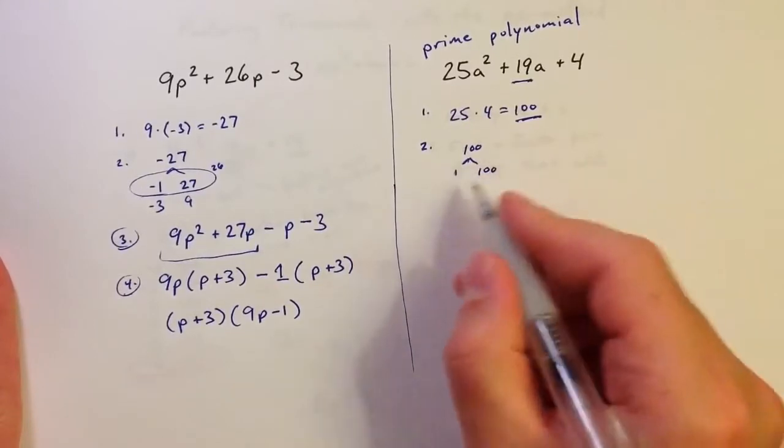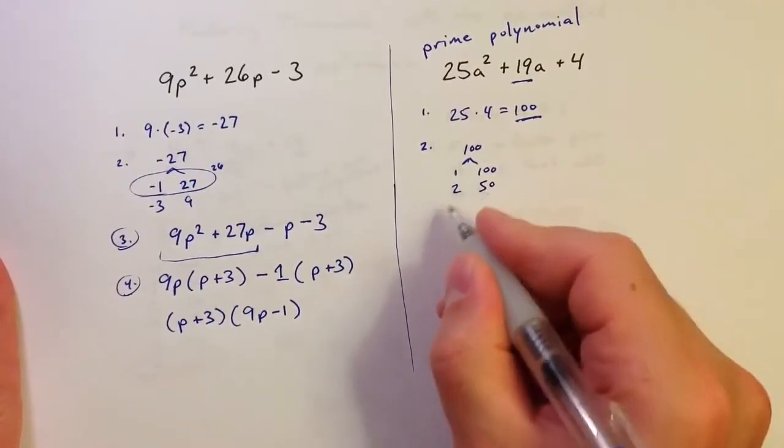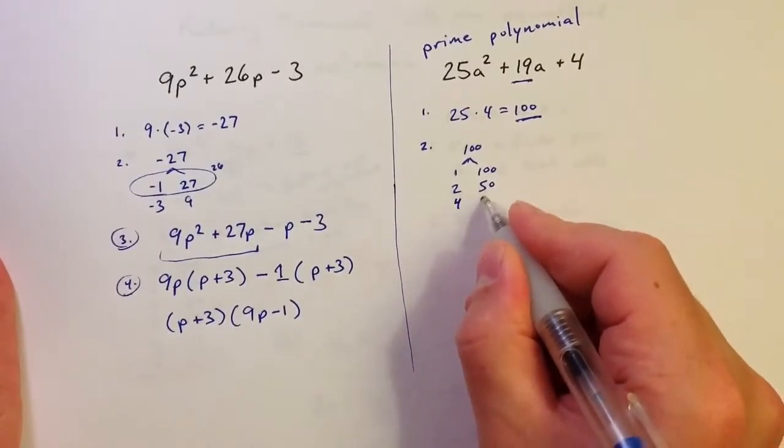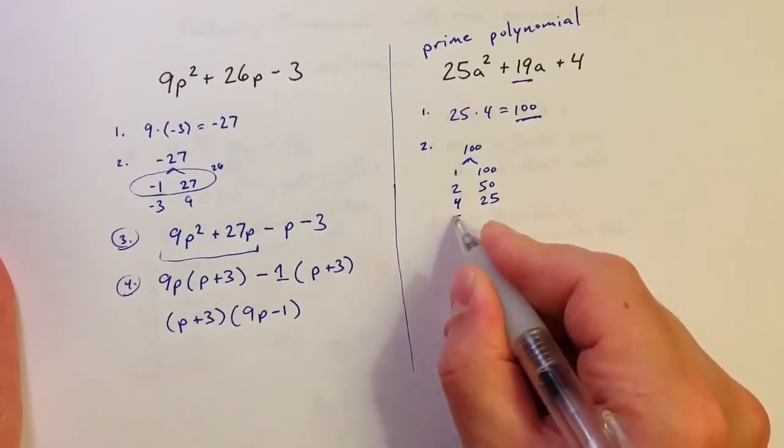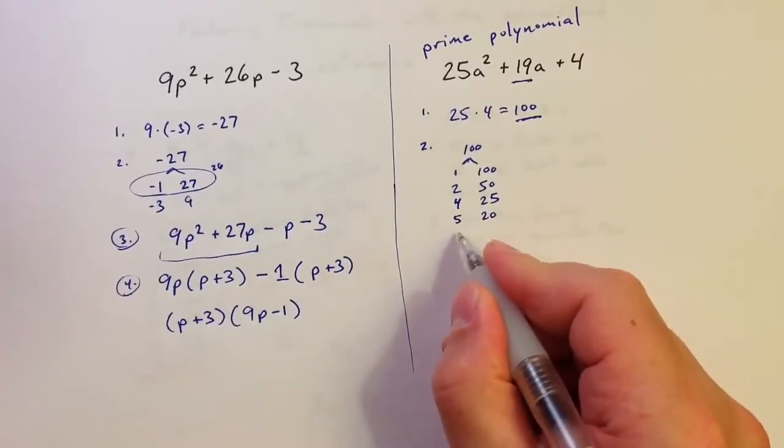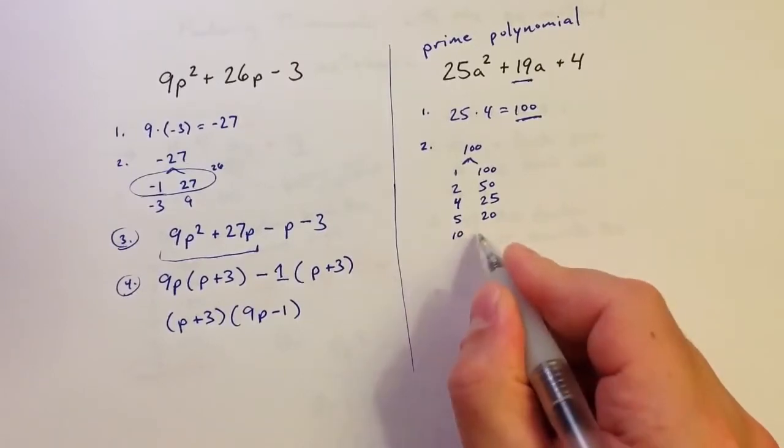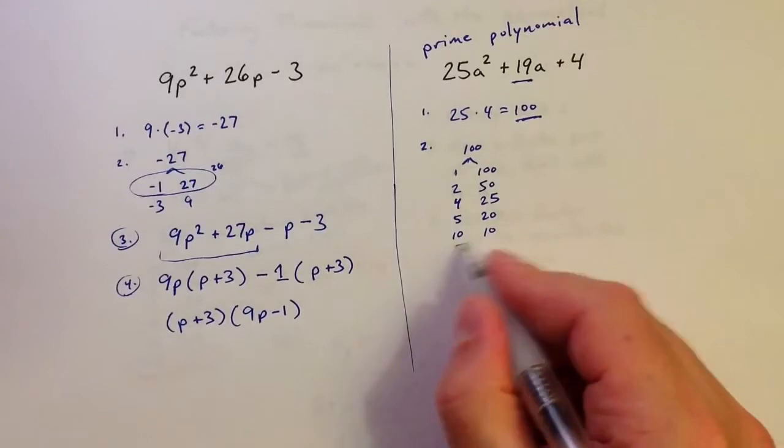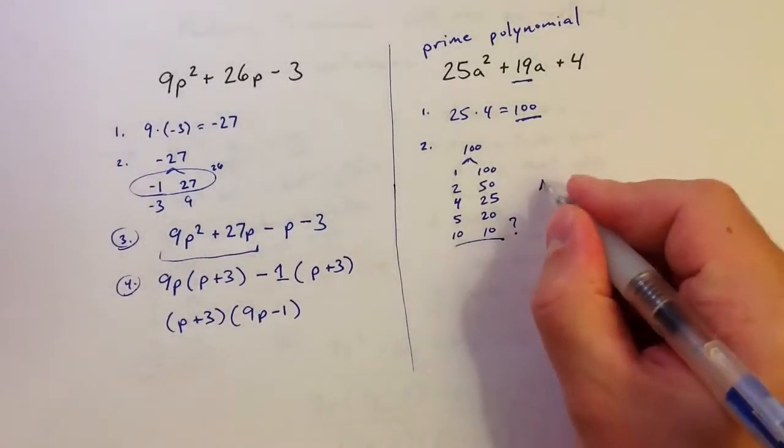So 1 times 100 is obviously 101. 2 times 50 adds up to 52. 4 times 25 would give me 29. 5 times 20 adds up to 25. 10 times 10 is 100, but that adds up to 20. And then that's it. So nothing adds up to 19.